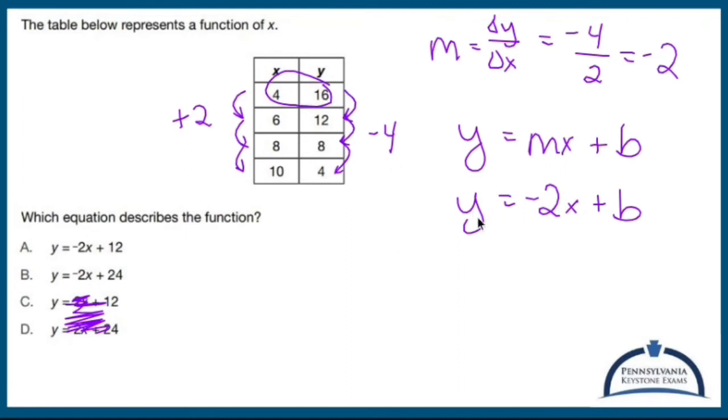So if I choose that point right there, my y value is 16, so I'm going to replace y with 16. That's going to equal negative two. If I chose that point, my x value is four, so I've got four plus b. Multiply these guys together, you've got negative eight plus b equals 16.